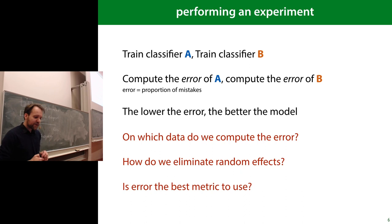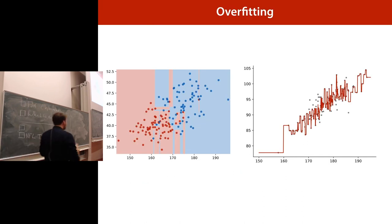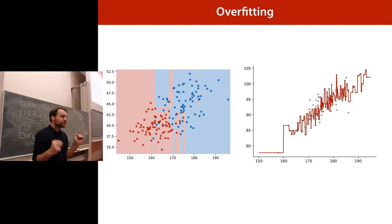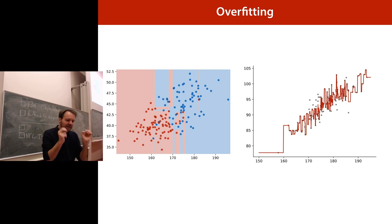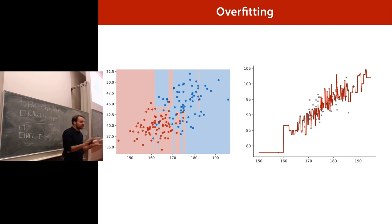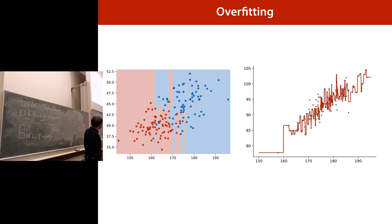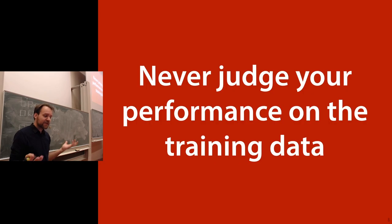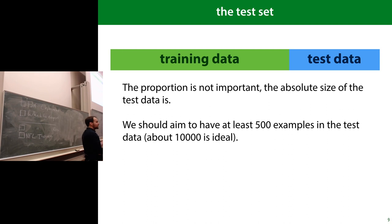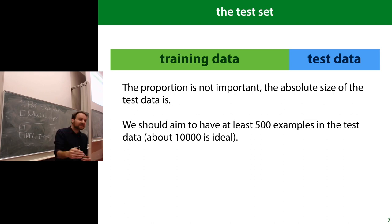If you compute the error on your training data, you may get very little error even though the classifier is not very good — this is called overfitting. The classifier is really describing every single detail of the data, but we want it to generalize. If we look at the training set error, the very best model is always the one that overfits. So we never judge performance on training data — we judge it on withheld data. First we train on training data, then compute the error on the test data.